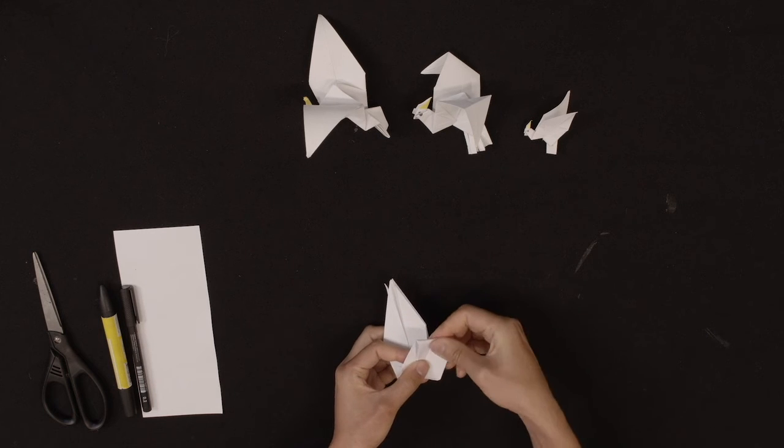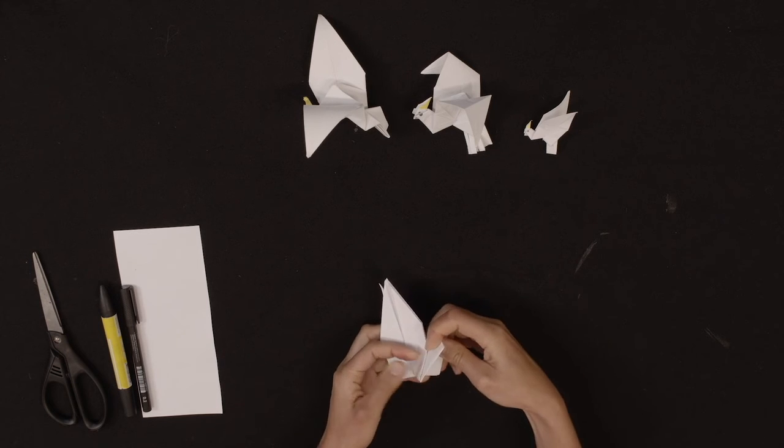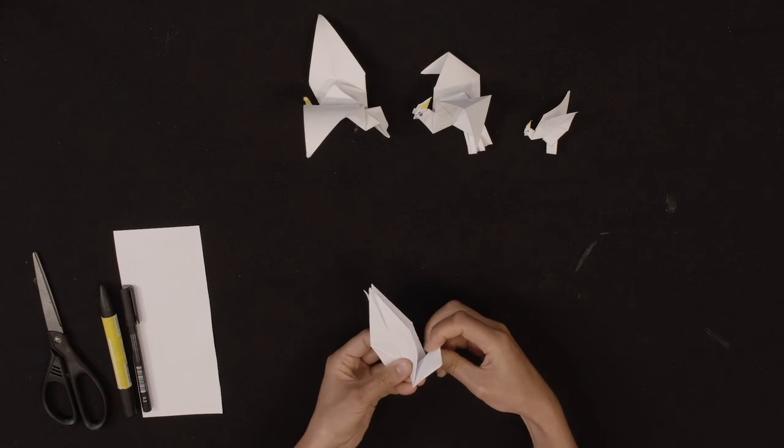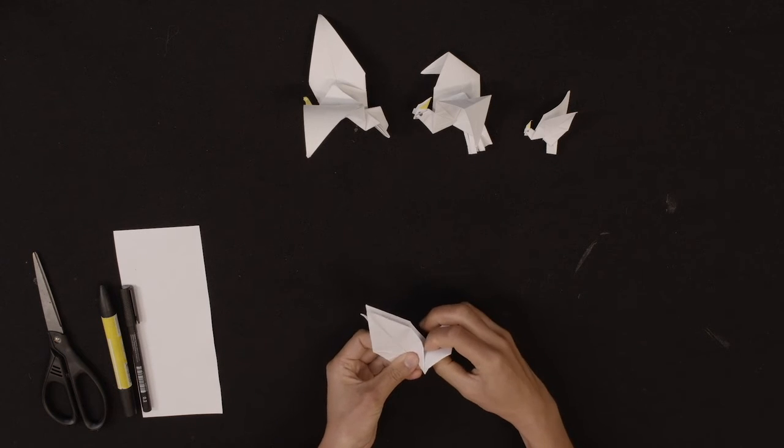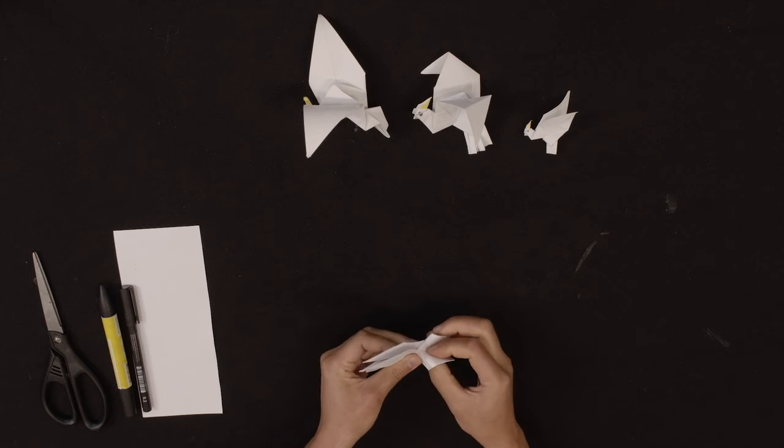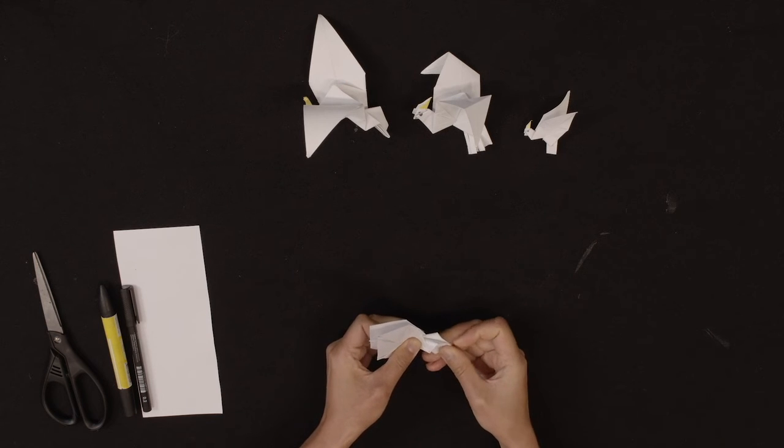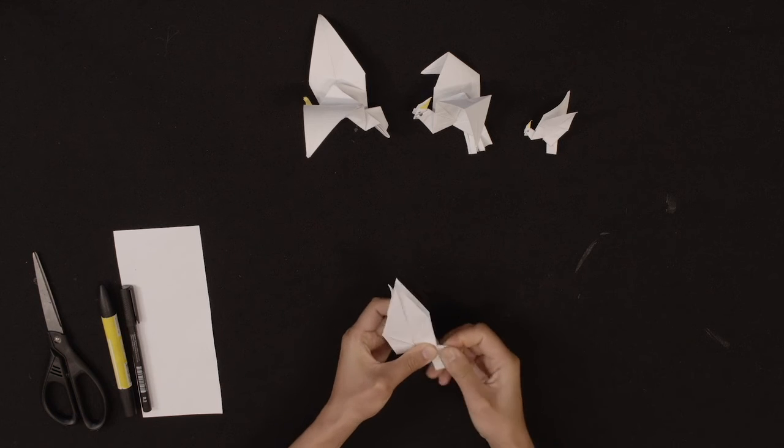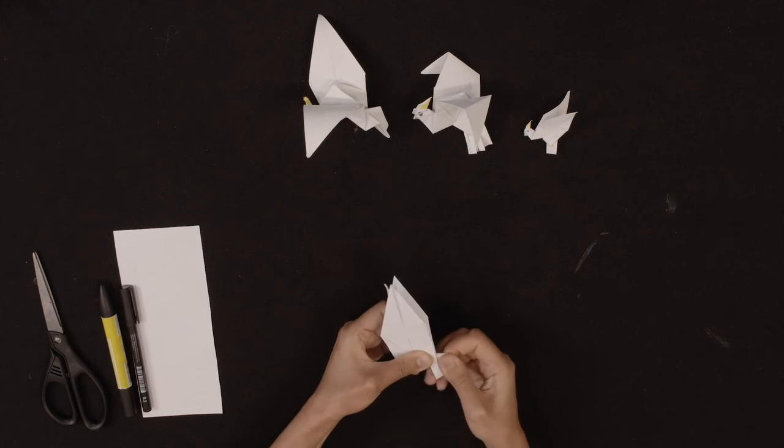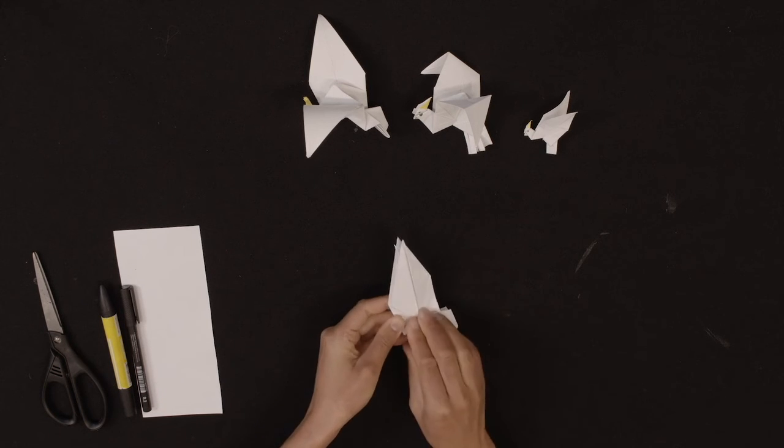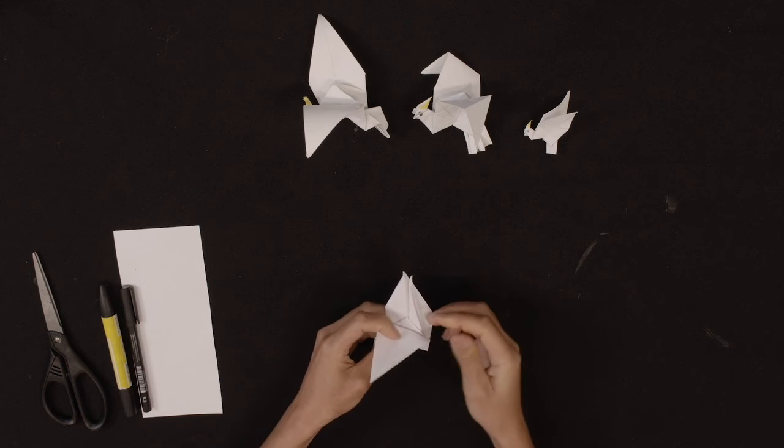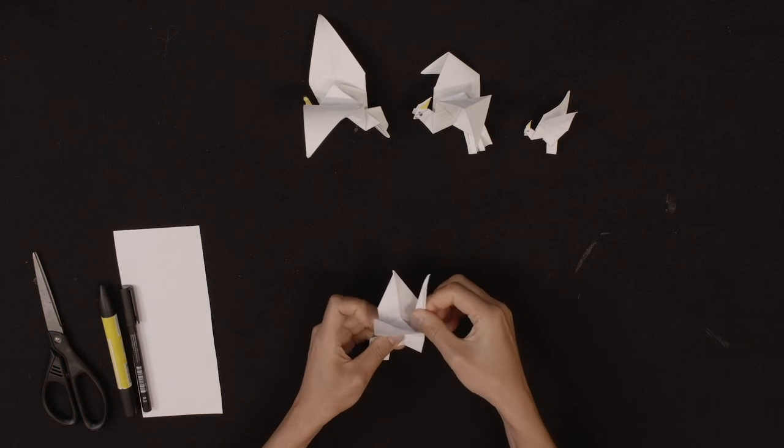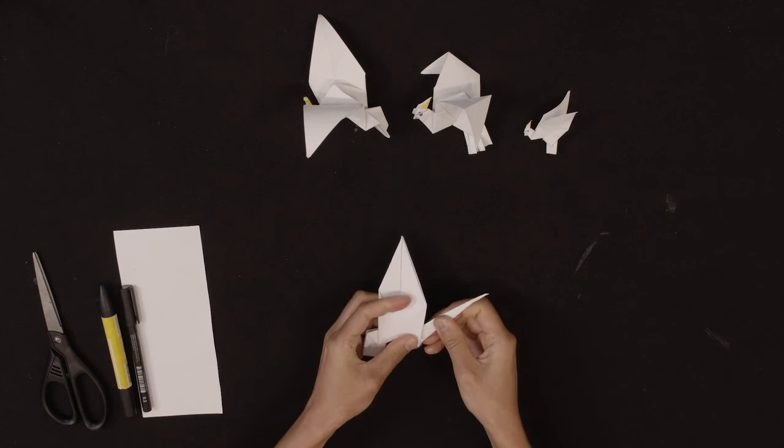And then you're going to fold the tail down so it creates like a triangle in the center. And then go all the way down and fold again. Yep, and turn around.